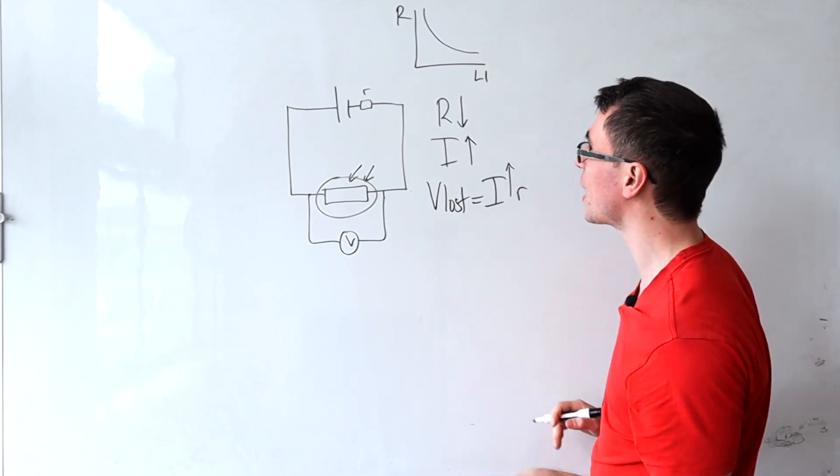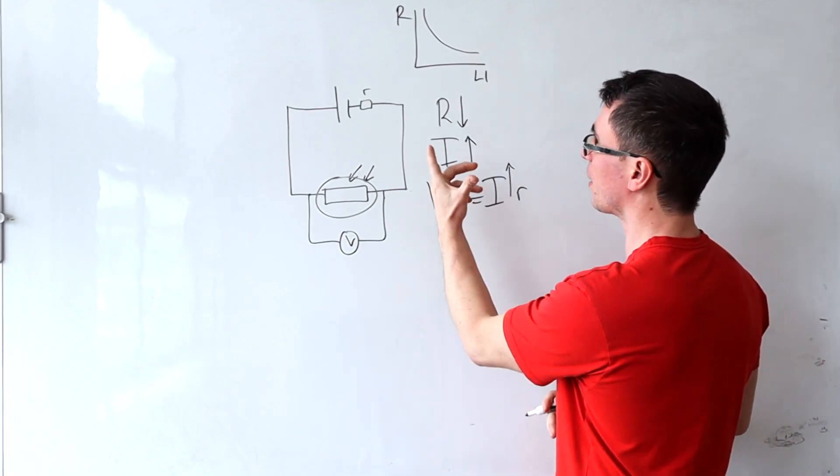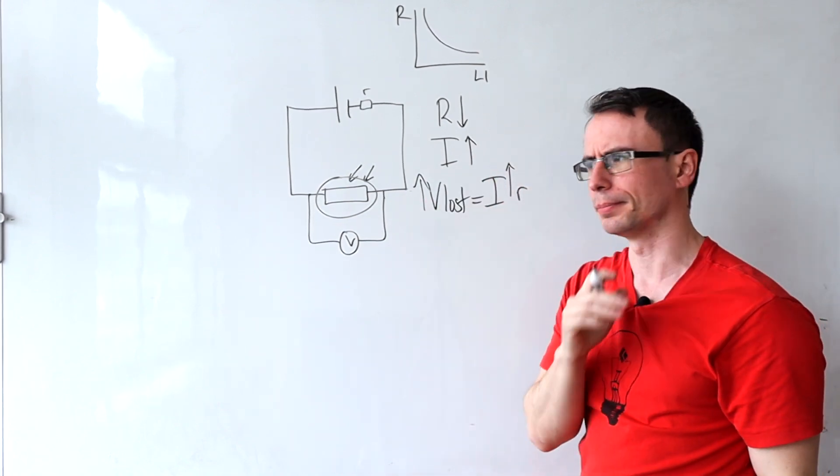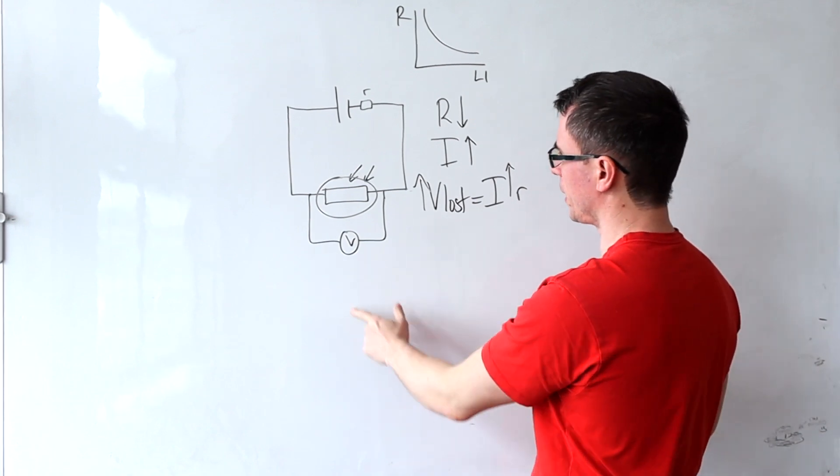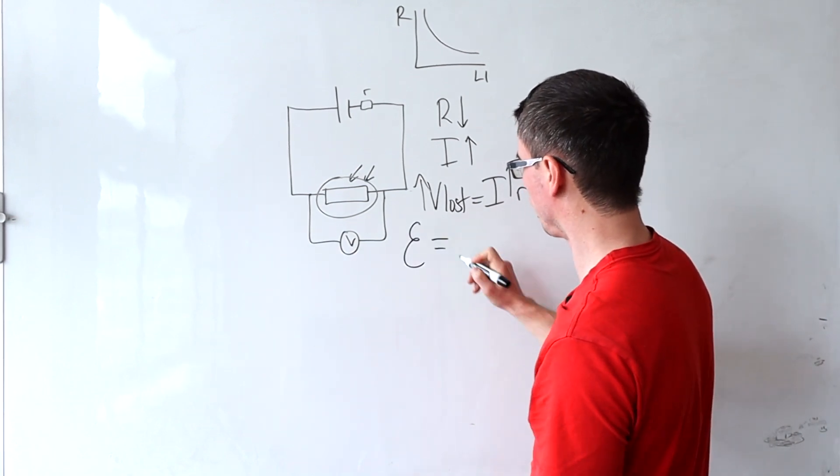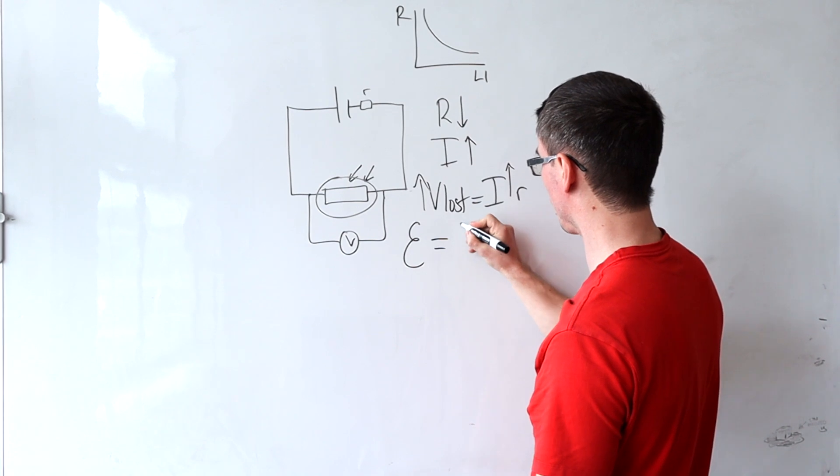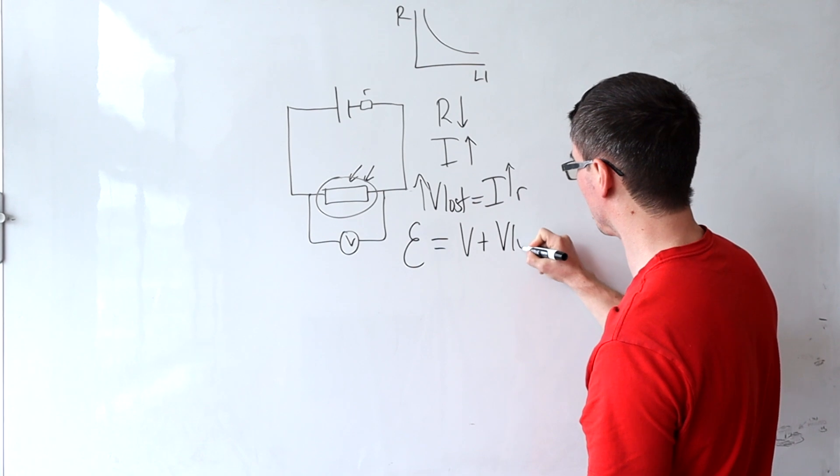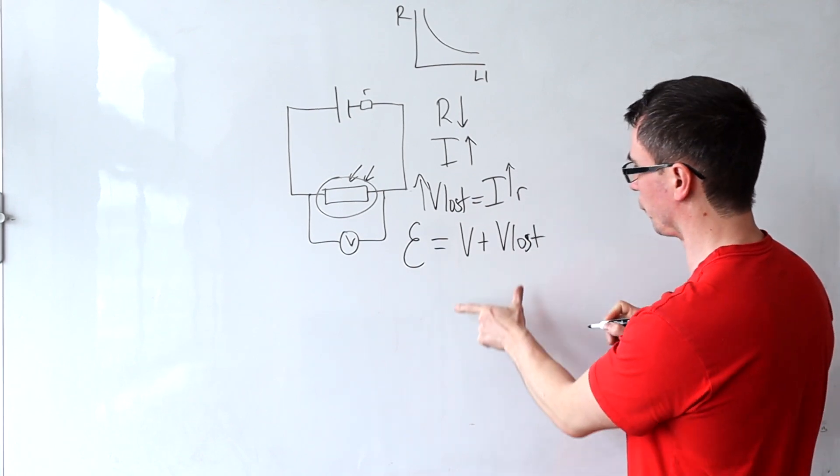...is completely unchanged, this means that the amount of lost volts must increase. Well, this here is the terminal PD. Our EMF is fixed, so the EMF is equal to the terminal PD plus the amount of lost volts.